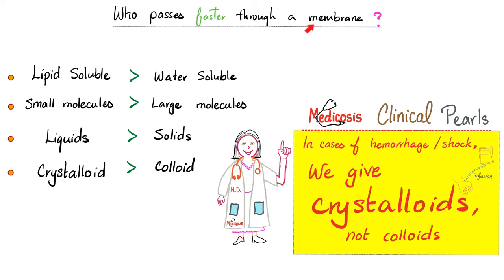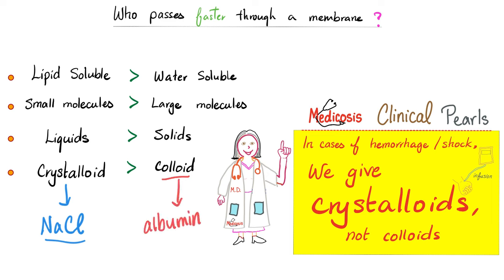Which medications pass faster through a membrane — which are absorbed faster? Lipid soluble will be faster than water soluble, because the membrane is a lipid bilayer. Small molecules are faster than large ones. Liquids are faster than solids, and crystalloids are faster than colloids. Crystalloids are something like sodium chloride in water — saline solution. Colloids are heavy, like a protein such as albumin. So if a patient is bleeding to death in hemorrhagic hypovolemic shock and you want to give fluids to prevent hypotension, you give crystalloids — they act faster.